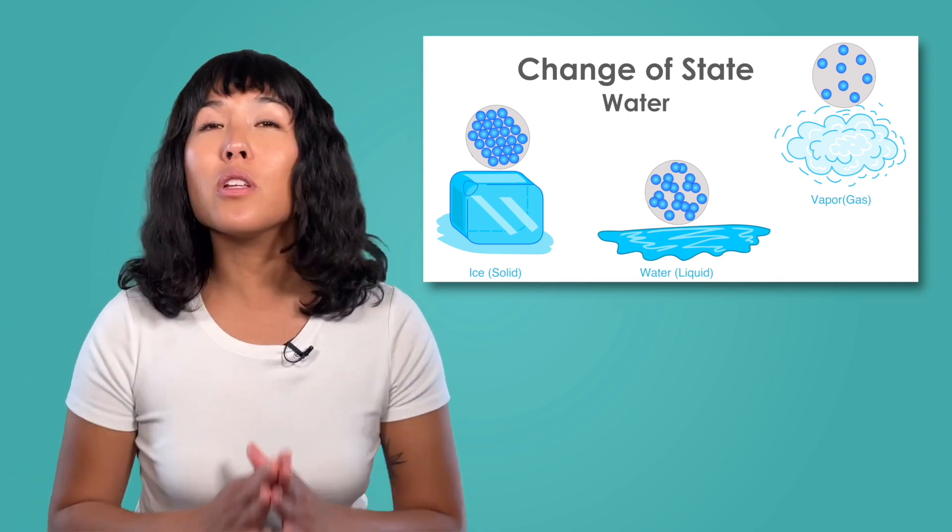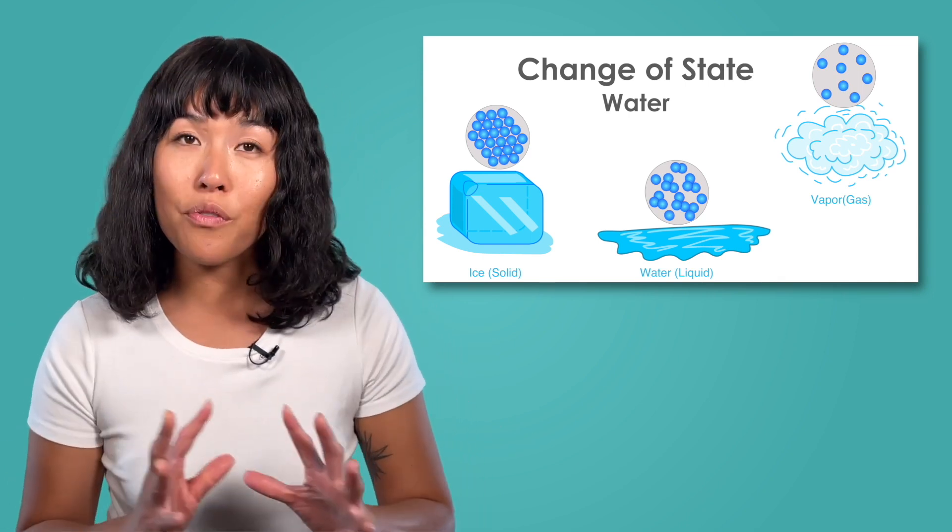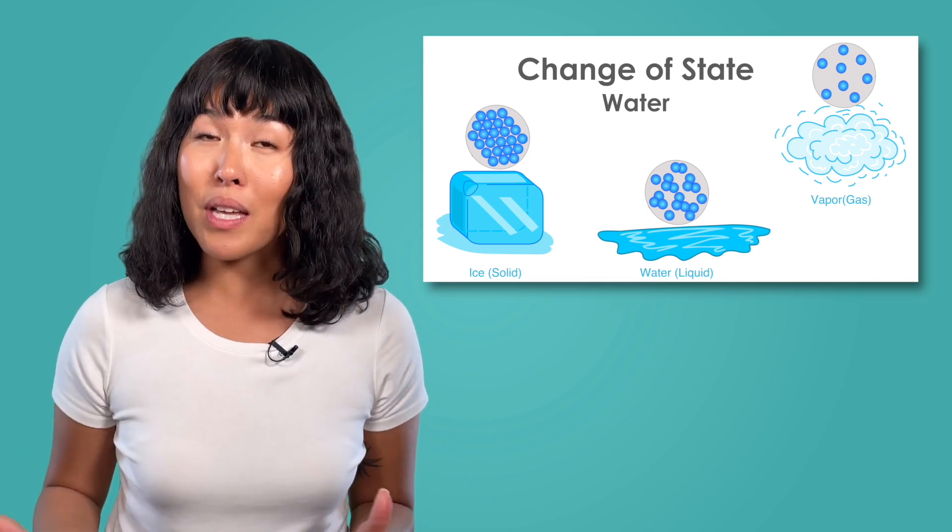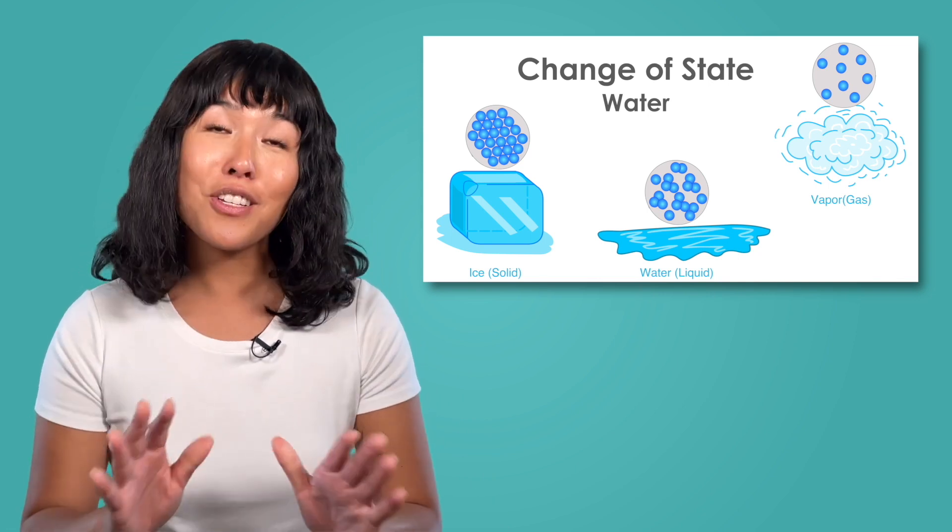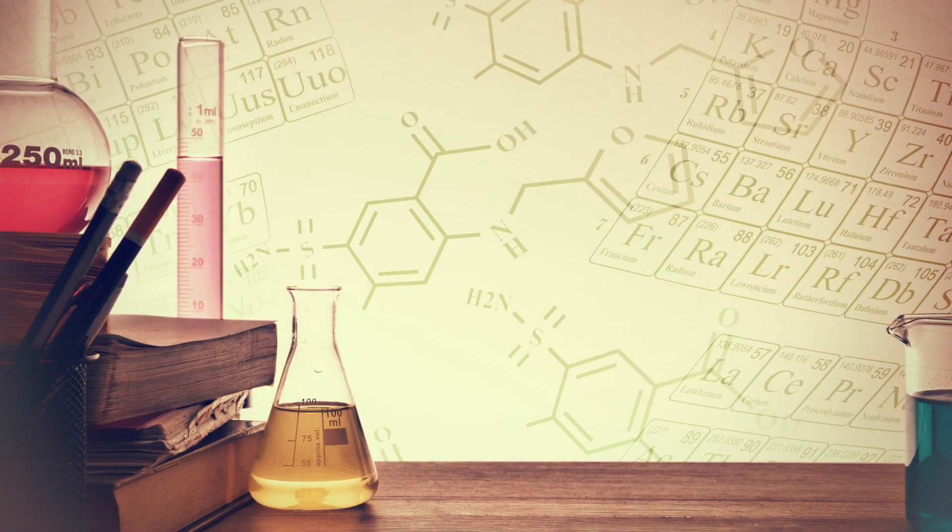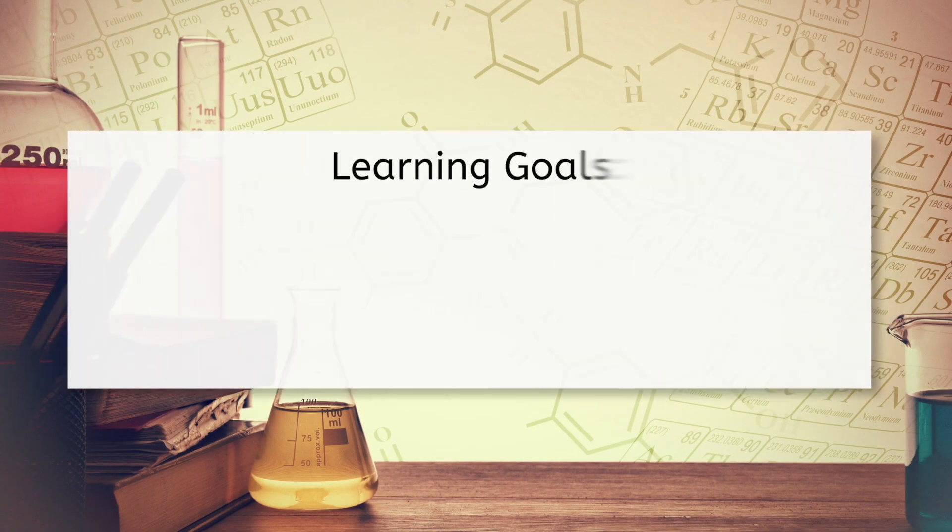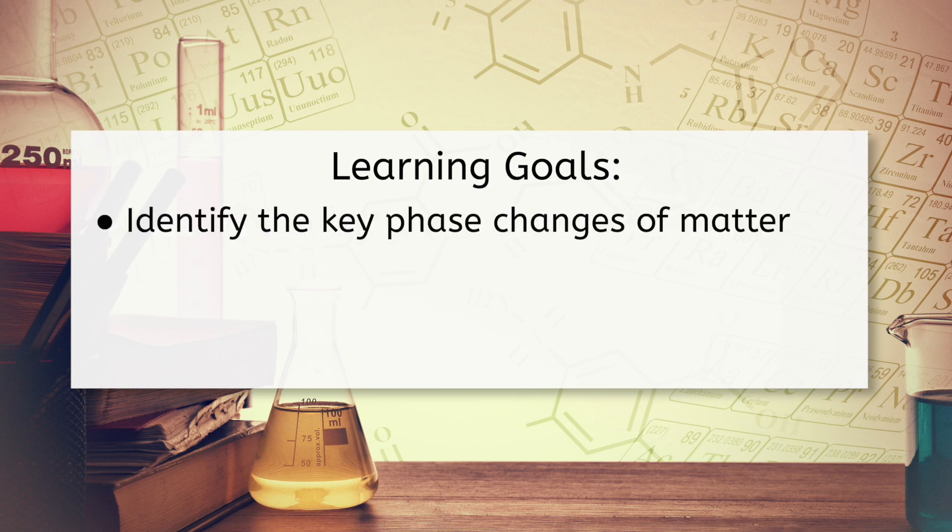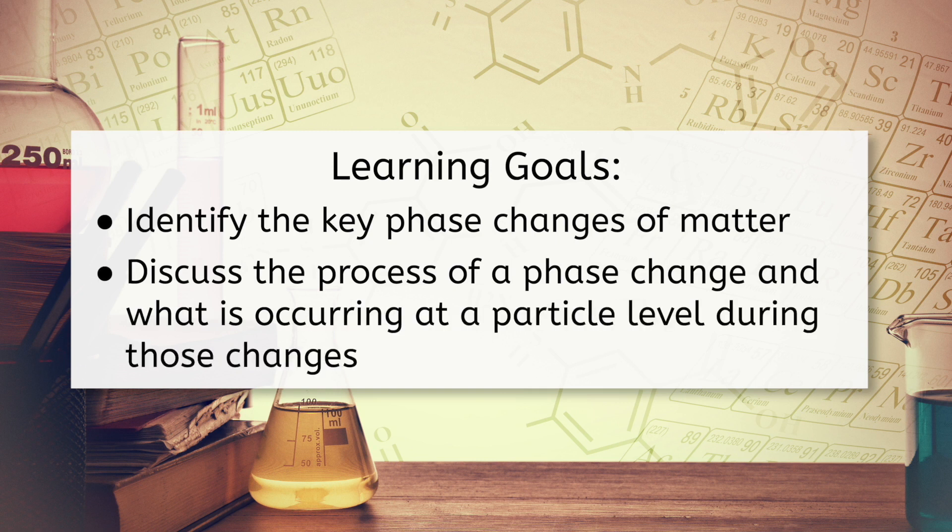In this lesson, we will learn more about the individual phase changes and what happens on the particle level during these changes. But before we get started, let's look at our goals for this lesson. By the end, you'll be able to identify the key phase changes of matter, discuss the process of a phase change, and what is occurring at a particle level during those changes.